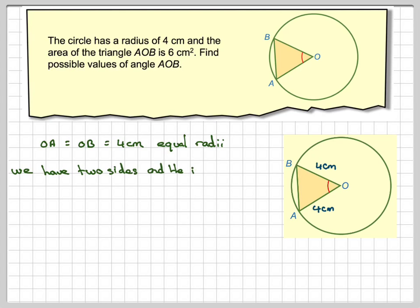And then if we label that 4cm and 4cm, and then we have two sides and the included angle sort of situation, because the angle is the one we want to know, and we know that the area of this triangle is 6.